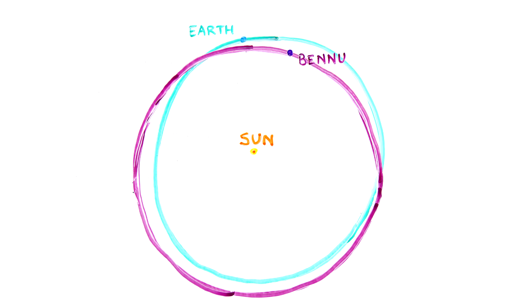Scientists are tracking Bennu's orbit, and they predict that it will come closer to the Earth than the Moon in 2135, in about 200 years. This close approach will change Bennu's orbit, making it difficult to predict where it will go next.